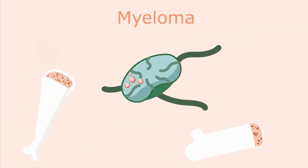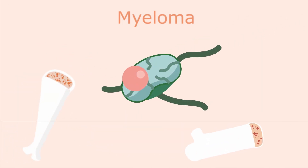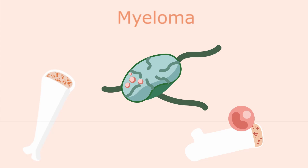The plasma cell starts as a premature B-cell in the bone marrow, and then it goes to the lymphatic system where it matures into a mature B-cell and then into a mature plasma cell. The plasma cell then goes back into the bone marrow where it resides.